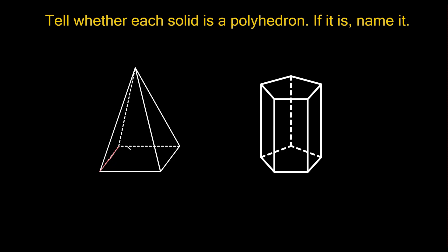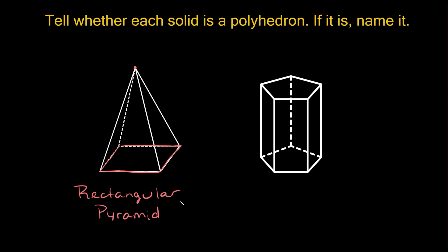The base would just be the bottom over here. What shape is this? It looks a little more like a rectangle than a square, so I'm going to say it's a rectangle. So this is going to be called a rectangular — and with any polyhedron there are only two options: you're either going to call it a pyramid or a prism. This is a pyramid because all the sides of the solid meet at a single point. So this polyhedron is called a rectangular pyramid.